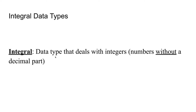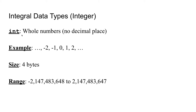The first integral data type we will look at are integers. When you want to declare them in your programs, it is just int. These integers are whole numbers without a decimal place, so they're numbers like negative 2, negative 1, 0, 1, and 2. These integers hold 4 bytes worth of information, which gives them a range of negative 2 billion to positive 2 billion.